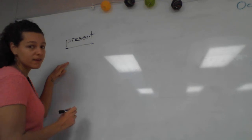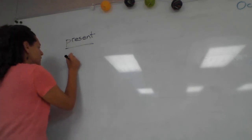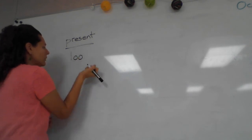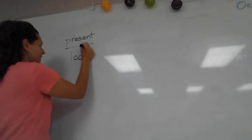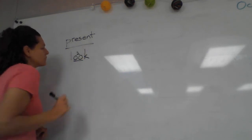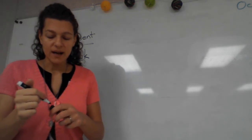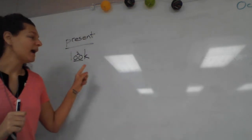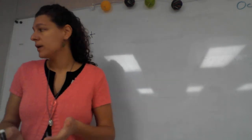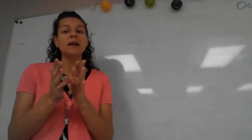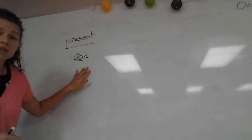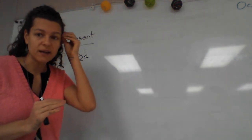Tell me what I need to write to spell look: L, O — and which O is it? Good, the oo — and line letter C. I hope you have the markings as well. So if I'm talking about the action — I look for the pencil — it's happening now but not in a continuing way, then we just use look. That's our regular present tense.